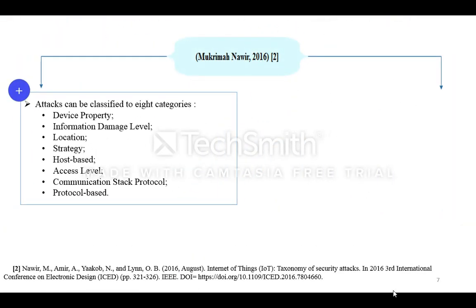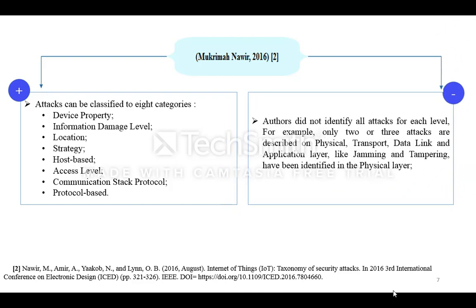Attacks can be classified into eight categories: device property, information damage level, location, strategy, host-based, access level, communication stack protocol, and protocol-based. Authors didn't identify all attacks for each level. For example, only two or three attacks are described on physical, transport, data link, and application layer — like jamming and tampering, which have been identified in the physical layer.